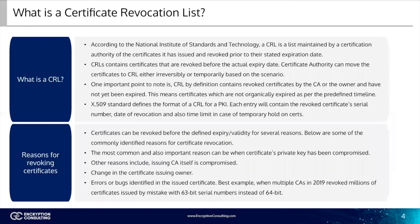So what exactly is a CRL? According to the National Institute of Standards and Technology, a CRL is a list maintained by a certificate authority of the certificates it has issued and revoked prior to the stated expiration date. CRLs contain certificates that are revoked before the actual expiration date. Certificate authority can move the certificates to CRL either irreversibly or temporarily based on the scenario. One important point to note is that CRL by definition contains revoked certificates by the CA or the owner that have not yet expired — meaning certificates which have not organically expired as per the predefined timeline.